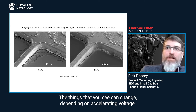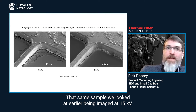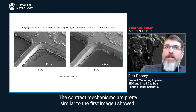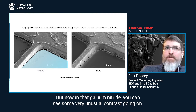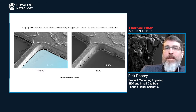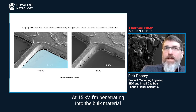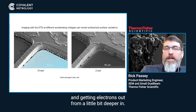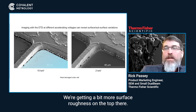The things that you see can change depending on accelerating voltage. That same sample imaged at 15 kV — the contrast mechanisms are pretty similar to the first image, but now in the gallium nitride you can see some very unusual contrast. Those turn out to be dislocations, subsurface damage in the film. At 15 kV I'm penetrating into the bulk material and getting electrons from a little deeper in, whereas at 2 kV we're getting a bit more surface roughness on the top.